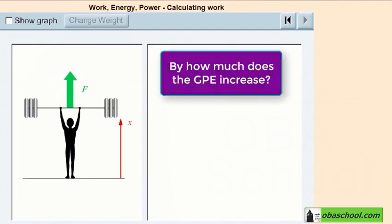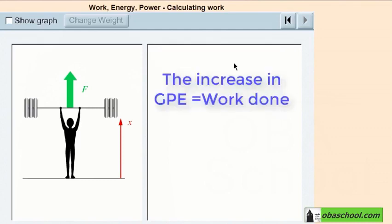By how much does the gravitational potential energy of the load increase? Well, since the increase in the gravitational potential energy equals the work done by the forces, the load increased by 900 joules.